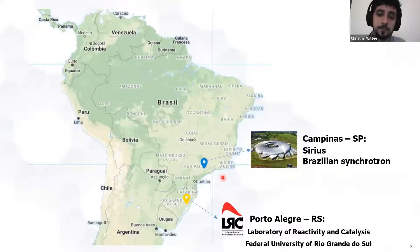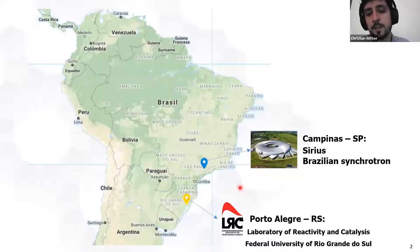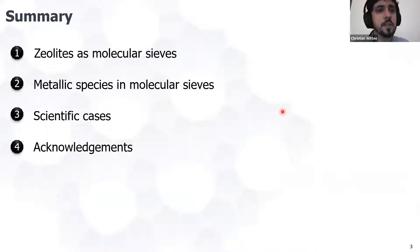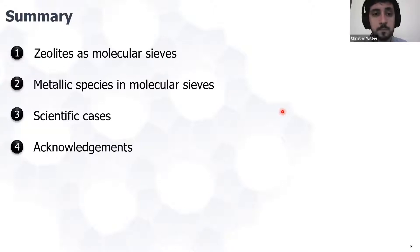I'm from the most southern state of Brazil, Rio Grande do Sul, working in Porto Alegre at the Laboratory of Reactivity and Catalysis. I'm about 1,000 kilometers from the Brazilian synchrotron, the new source in Campinas, São Paulo. Today I'm going to talk about zeolites as molecular sieves, the metallic species we normally find in molecular sieves, three scientific cases, and then acknowledgments.